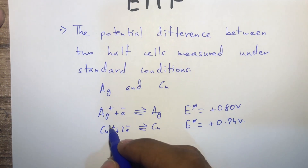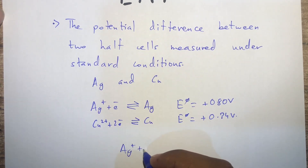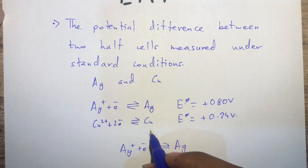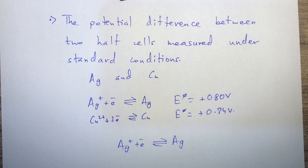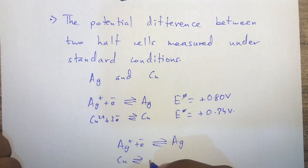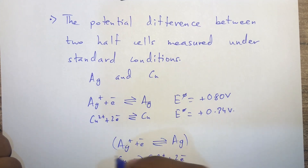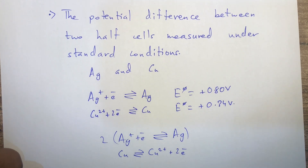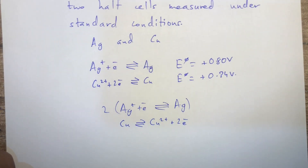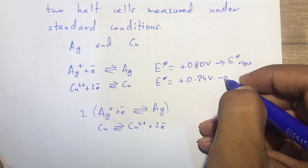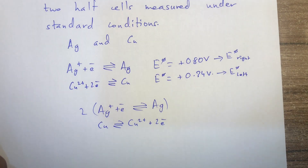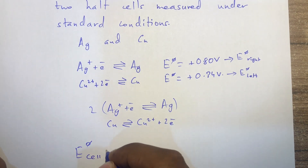Since silver's SCP value is more positive, reduction happens at silver - we keep the same equation showing reduction. Since copper's SCP value is less positive, oxidation occurs at copper. The silver electrode pulls electrons from the copper electrode: silver ions are being reduced at silver, while copper is being oxidized at the copper electrode. We flip the copper equation to show oxidation, multiply to balance, and cancel electrons.